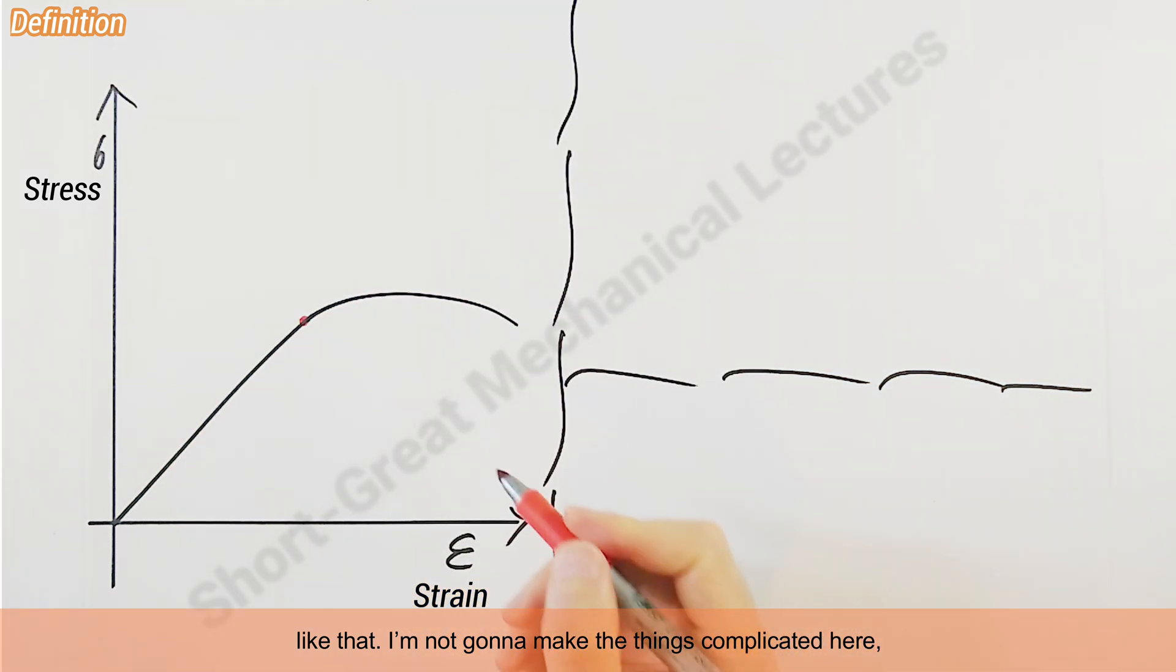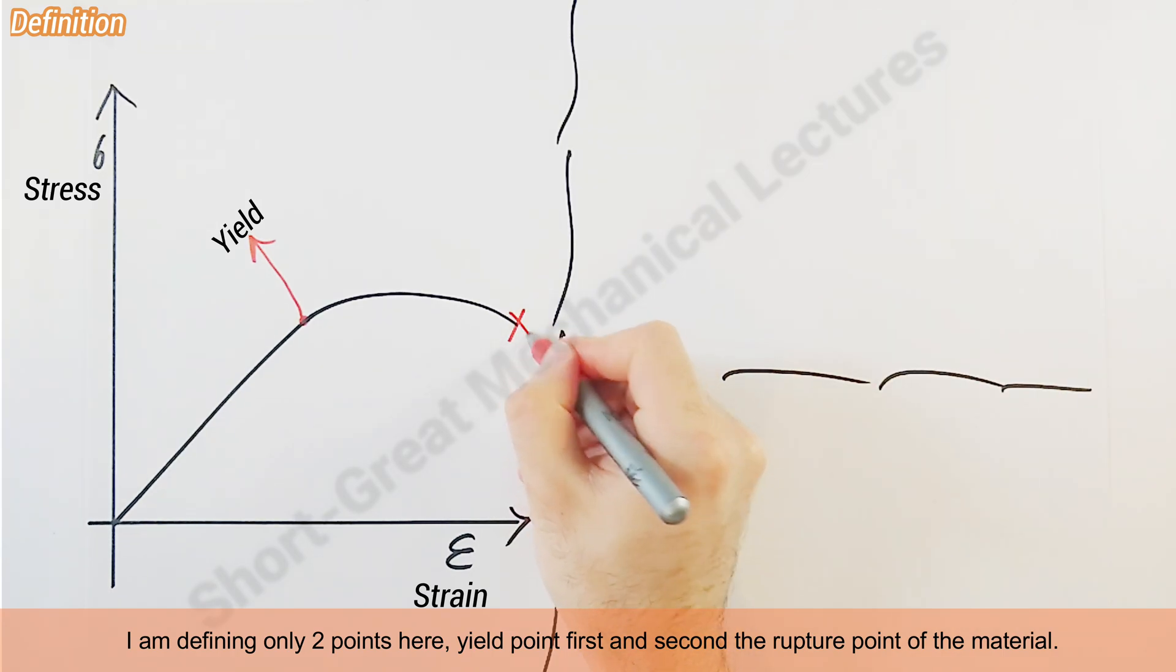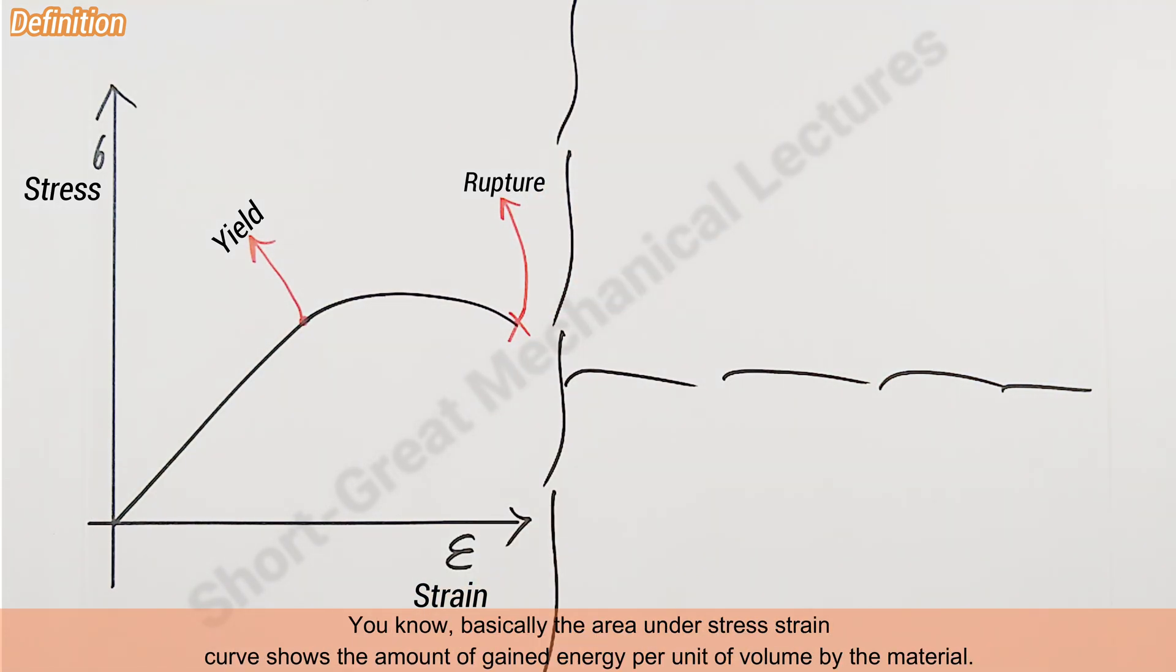I'm not going to make these things complicated here. I'm defining only two points: first, the yield point, and second, the rupture point of the material. Basically, the area under the stress-strain curve shows the amount of gained energy per unit of volume by the material.